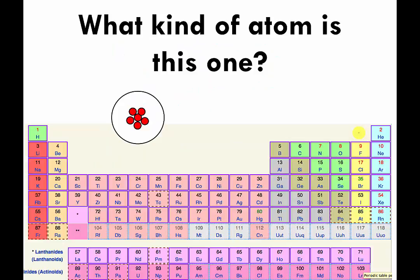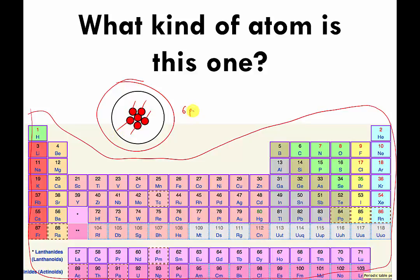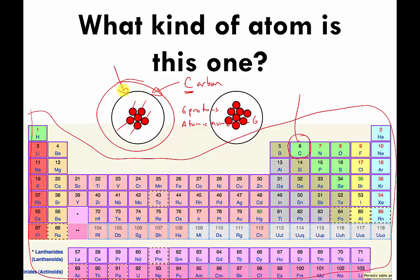Now I want you to play along — pause the video and use the periodic table to tell me what type of atom I'm showing you. If you unpause: let's count the protons — one, two, three, four, five, six. Six protons, so the atomic number equals six. We look up the box with a six, and it has the symbol C. C stands for carbon, so this is my cartoon version of a carbon atom.